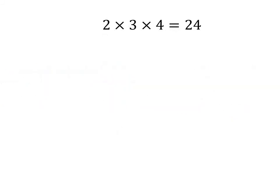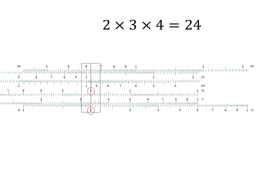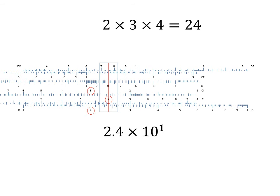The I in the CI scale stands for inverted. It has the effect of calculating 1 over the number. Since dividing by a fraction is mathematically equivalent to multiplying by the number, this means we can use the CI scale to do two multiplications at once. In this example we start by finding 2 on the D scale, then move the slide so that 3 on the CI scale is lined up with 2 on the D scale, then move the cursor to 4 on the C scale, and read the final answer on the D scale.